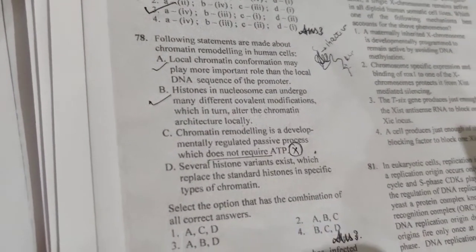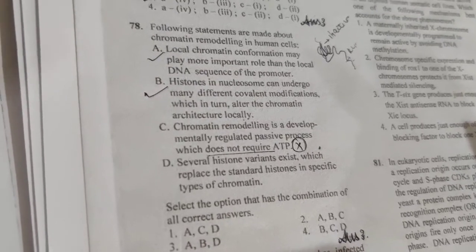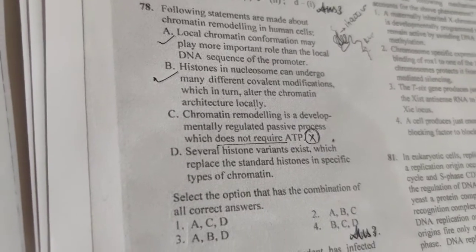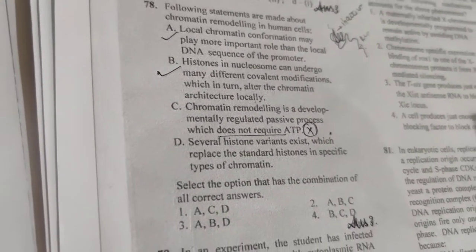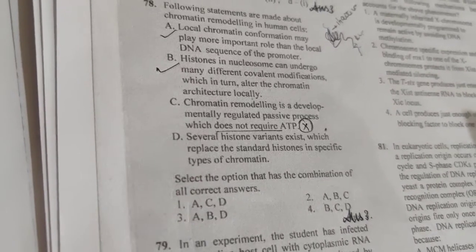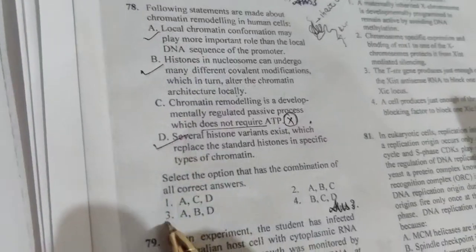And D, several histone variants exist which replace the standard histones in specific types of chromatin. Several histone variants like H2AZ, H3.1, H3.3. So the correct answer is 3.